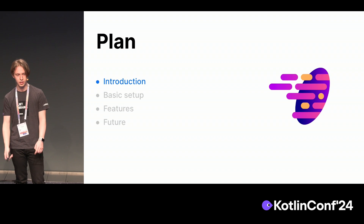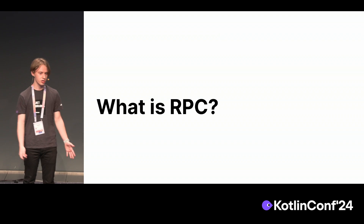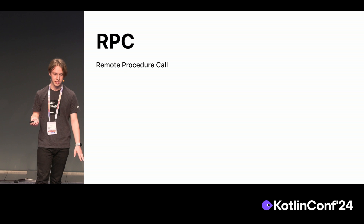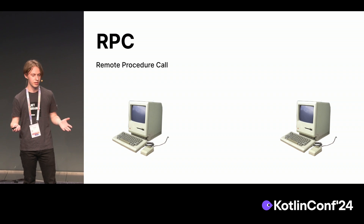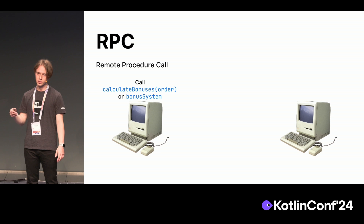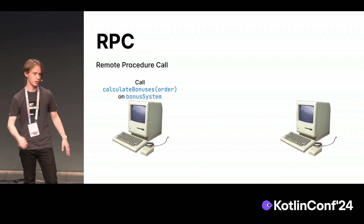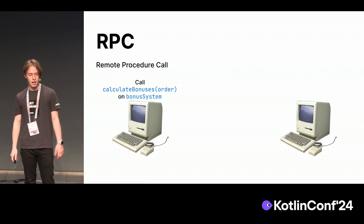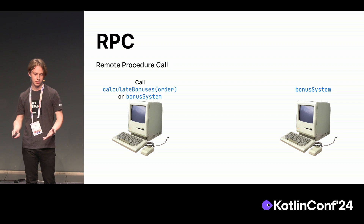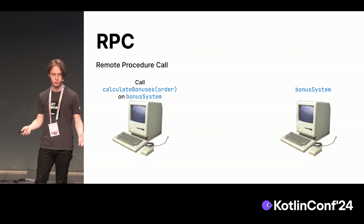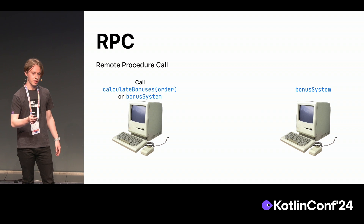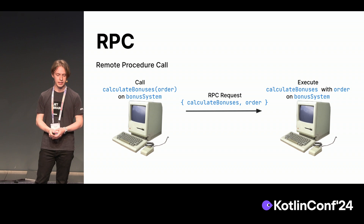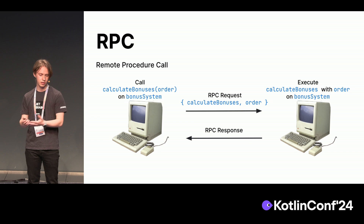Let's start with the introduction by answering the question of what is actually RPC. RPC stands for remote procedure call. Imagine you have two machines, two services on them, and you want to call some function that will calculate bonuses for your application — for a cafe app, for example. Your users make orders and you want to calculate bonuses based on those orders. But it so happens that the bonus system is on another service.